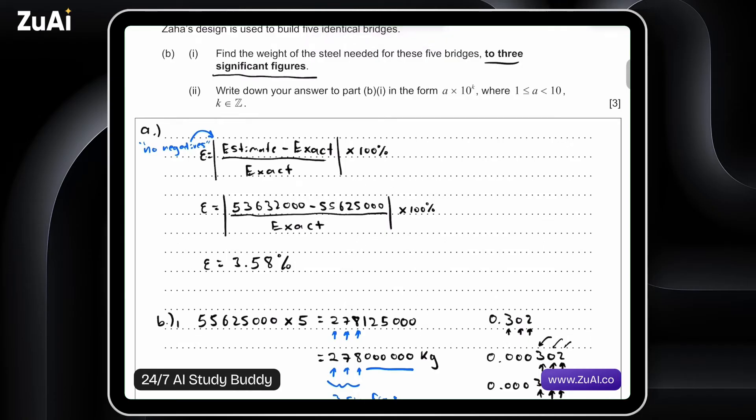Part 2 of B asks us to write down our answer to part 1 in the form of a times 10 to the k, where a is between 1 and 10. So a is greater than or equal to 1 or less than 10. It's essentially a one-digit number. And then this k is an element of, this is called our integer values. So these are whole numbers, positive, negative whole numbers.